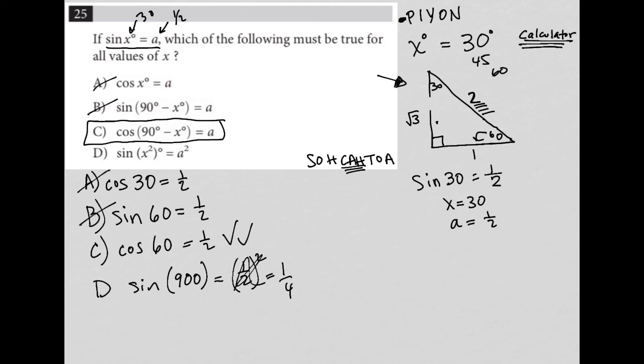So is it true that the sine of 900 is 1 fourth? I'm just going to go to my calculator just to make sure whether that's the case or not. So sine 900. And let's see. No, it's not. So D is gone. So choice C is the best answer for this question.